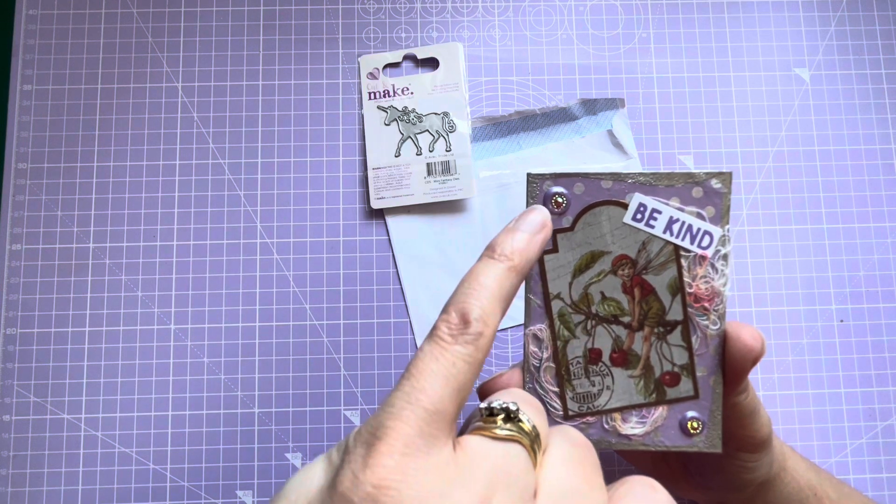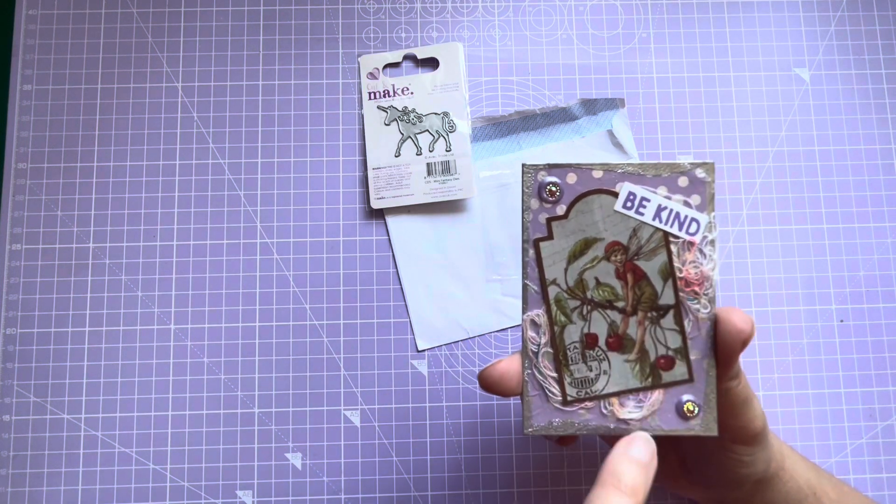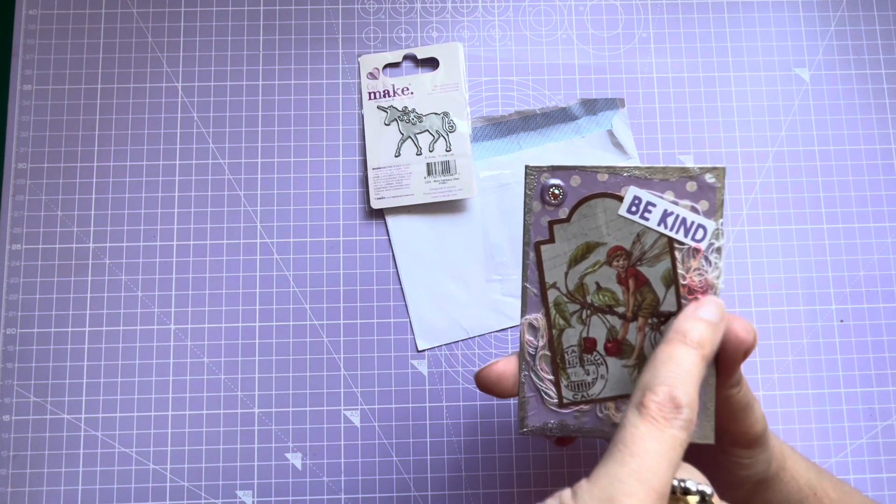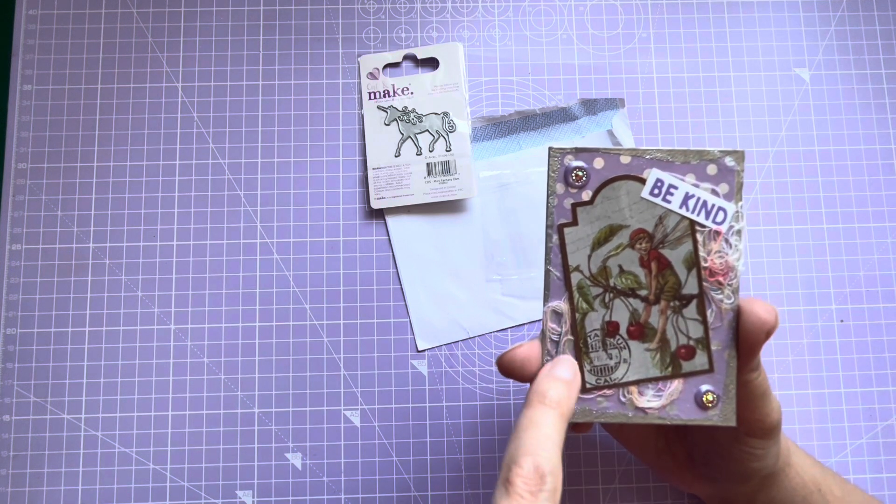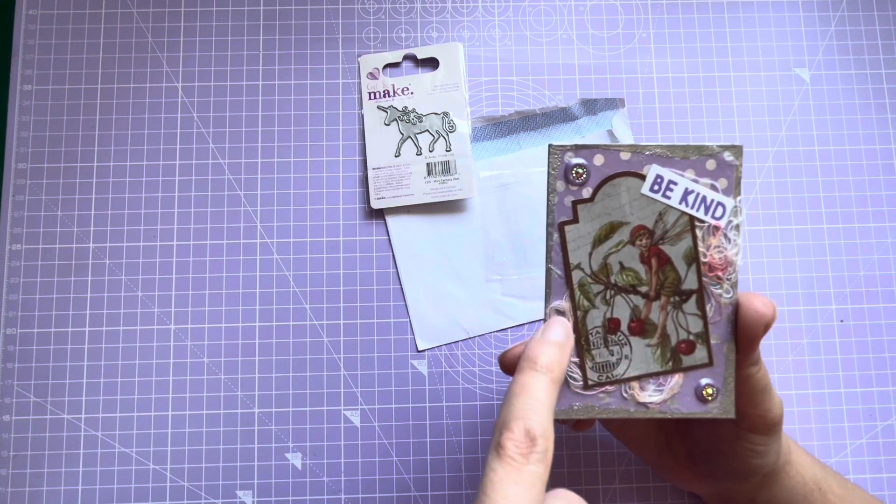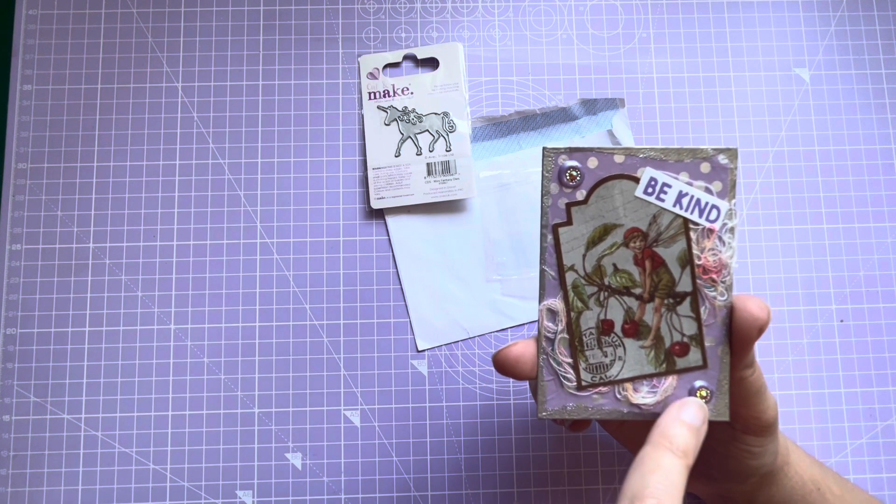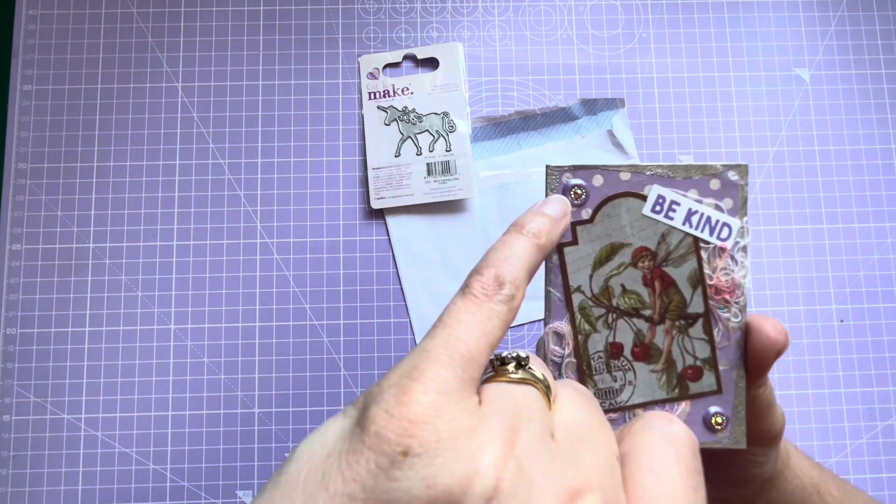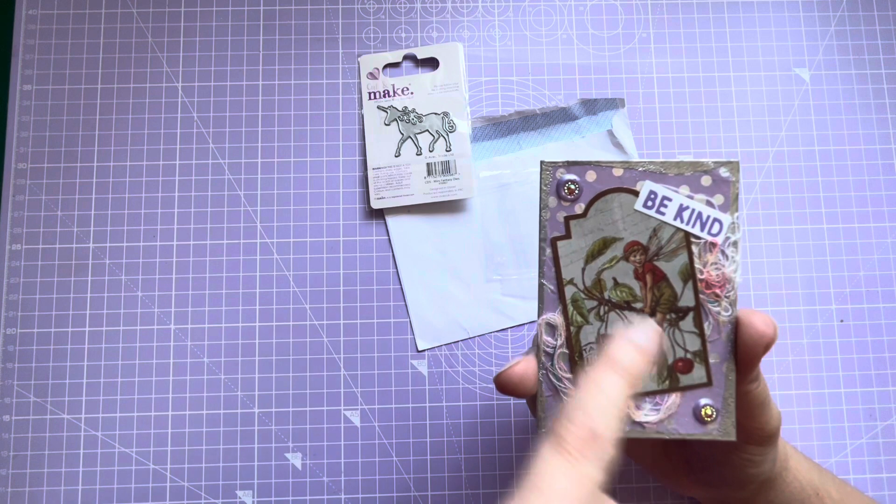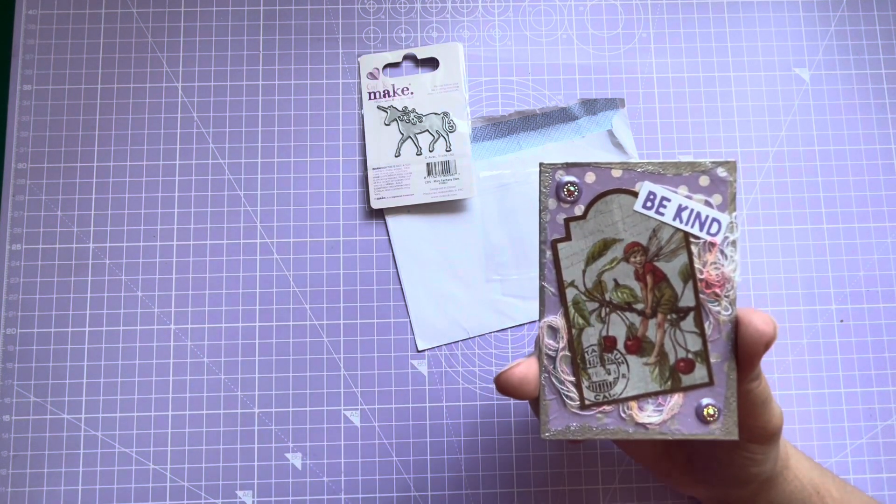It says 'Be Kind' and there's some thread. I love this - I need to do more of this, putting the thread behind the focal image. I think it makes a really lovely effect. We've got some little gems that are stuck into sort of like Nuvo drops pushed into those. They're beautiful.